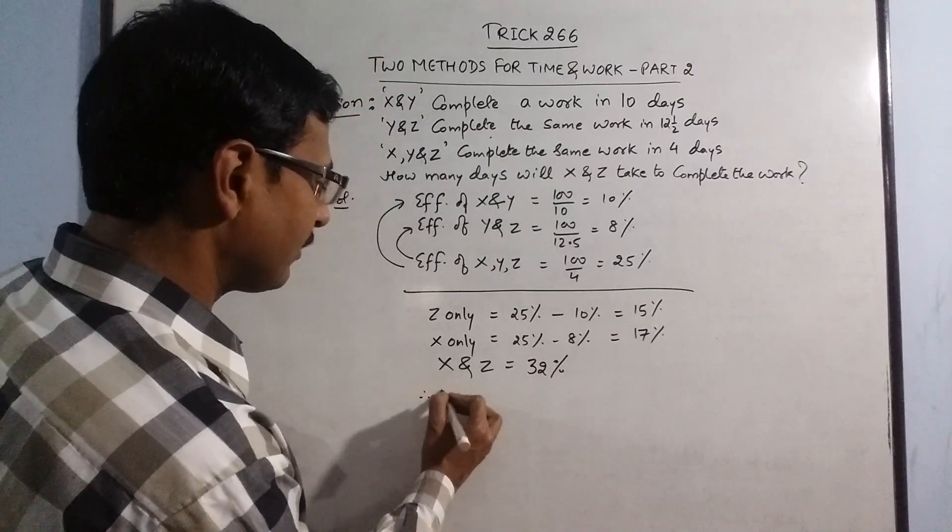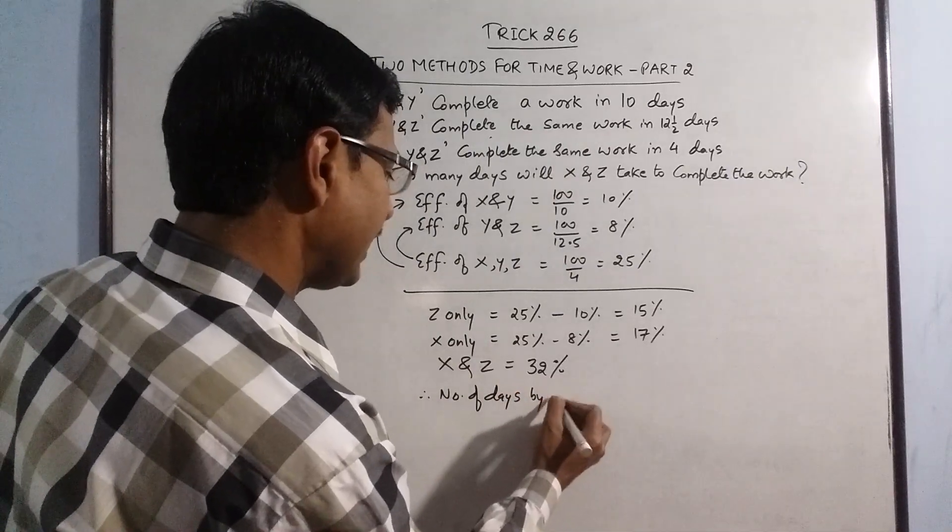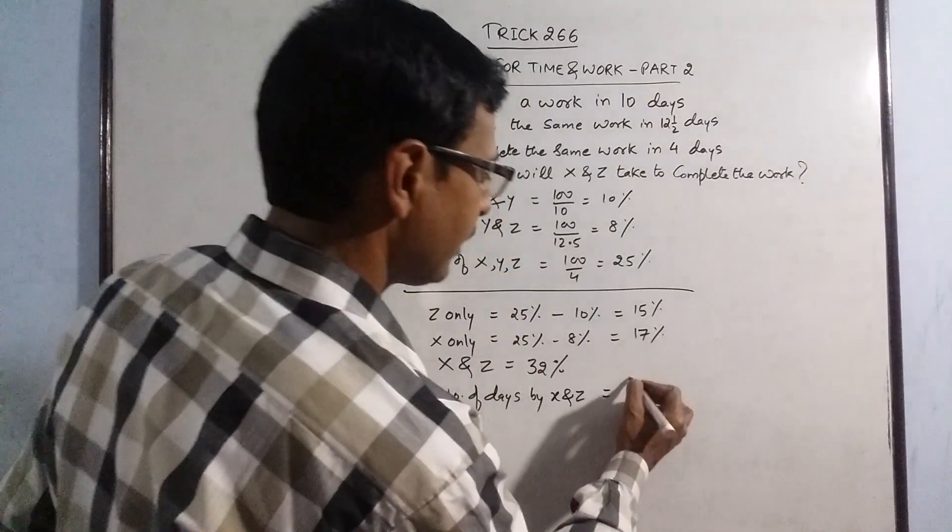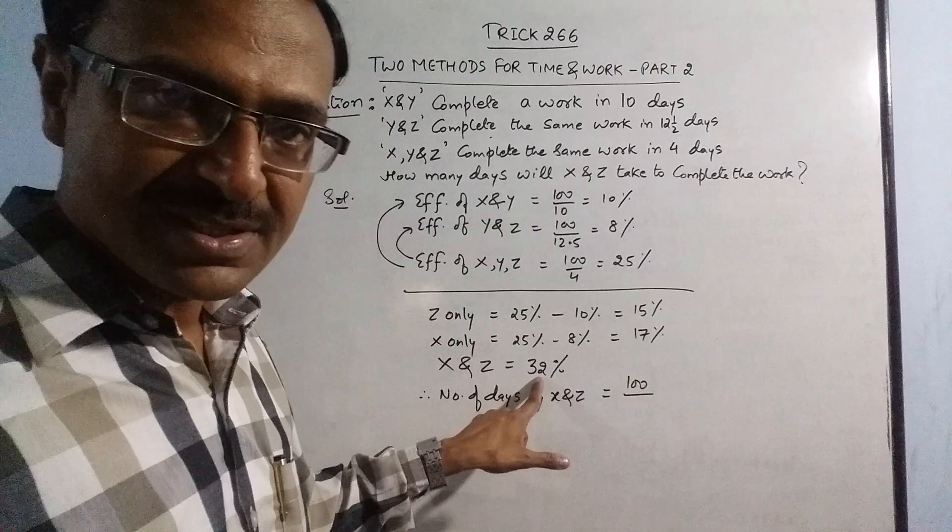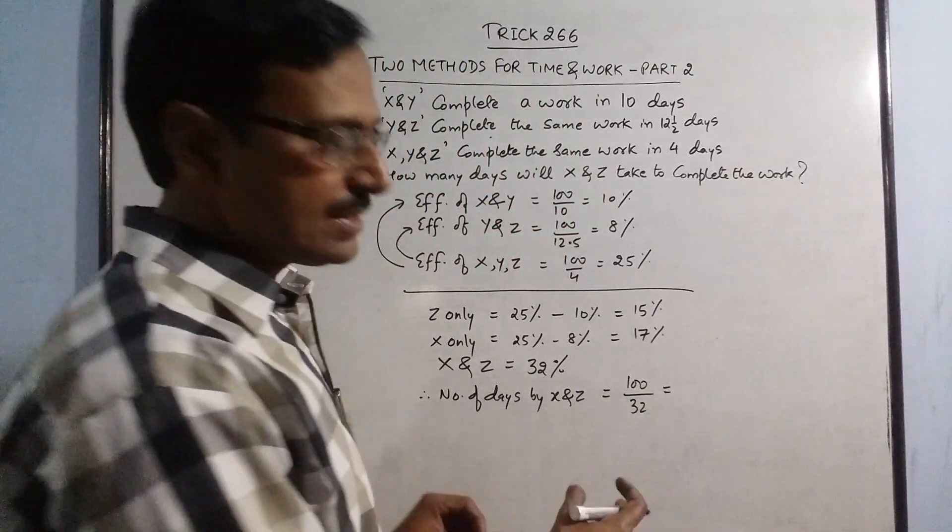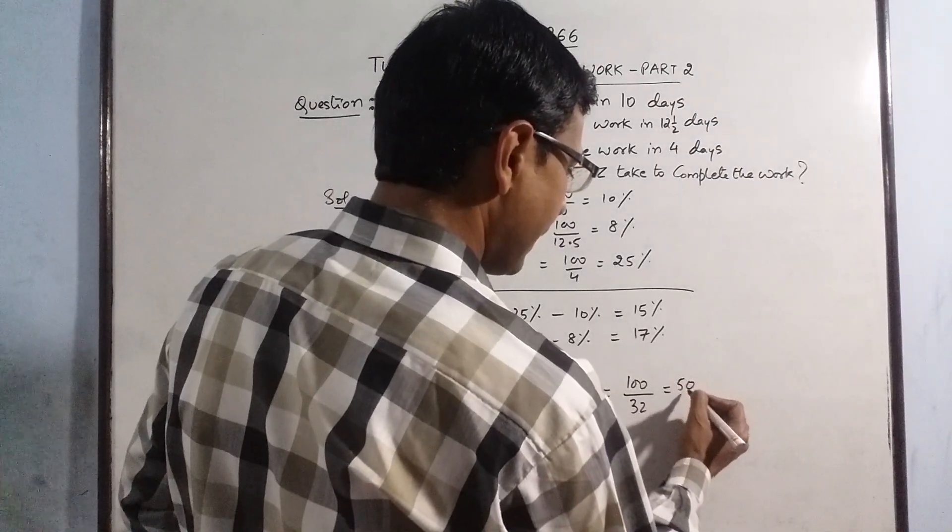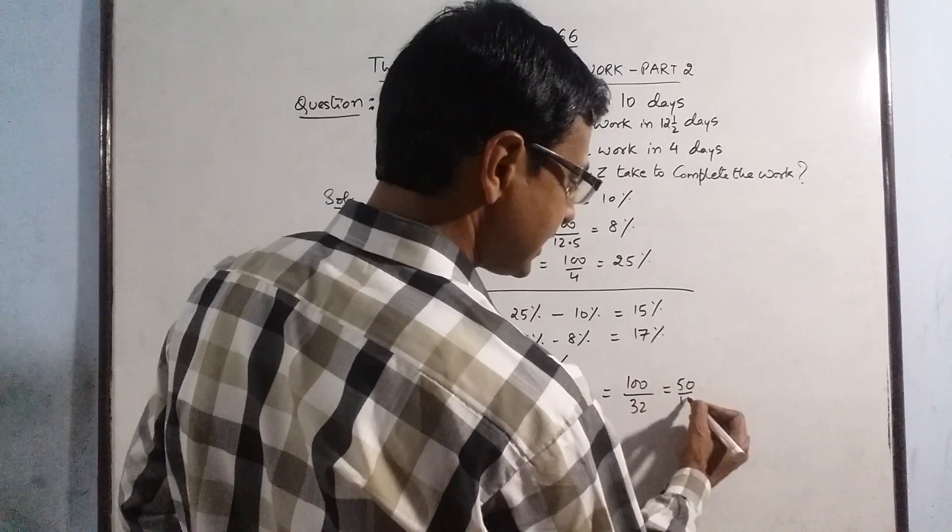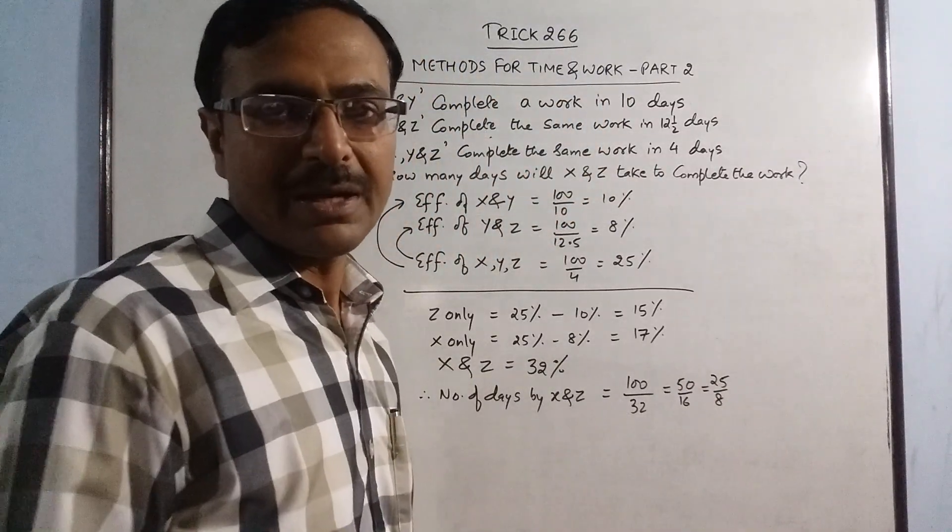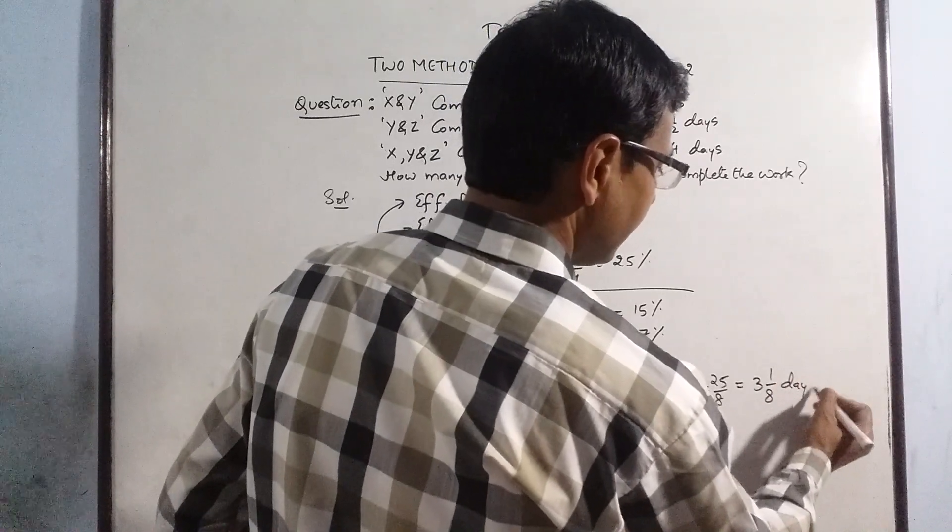Now the next step will give you the answer. Therefore number of days taken by x and z is just divide just like we did here, 100 divided by the combined efficiency is 32 percent. So 100 divided by 32, so you can very easily cancel this by 4. So 50 by, I am cancelling this by 2 first, 16. Now further by 2, 25 by 8. So 25 by 8 will give you your answer in mixed fraction that is 3 1/8 days will be your final answer of this question.